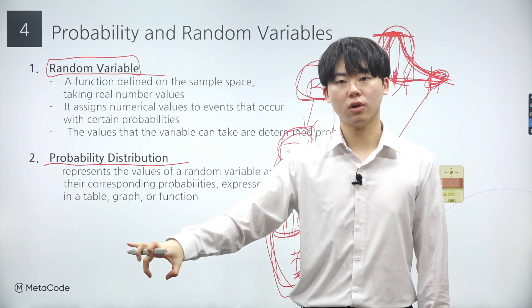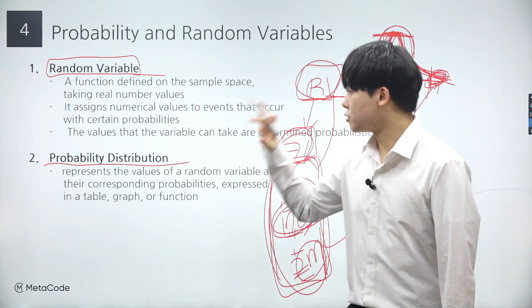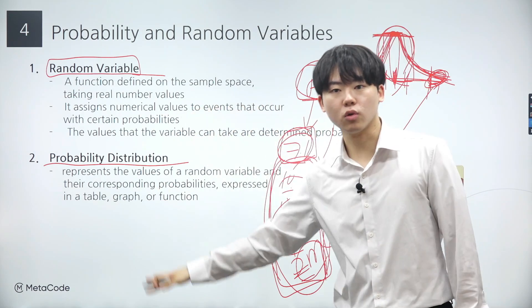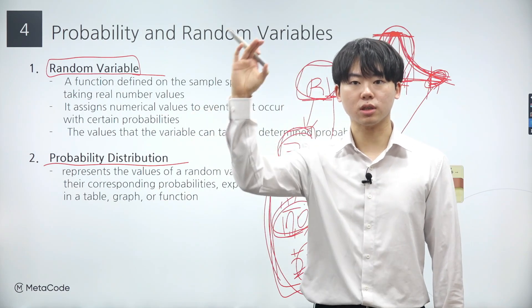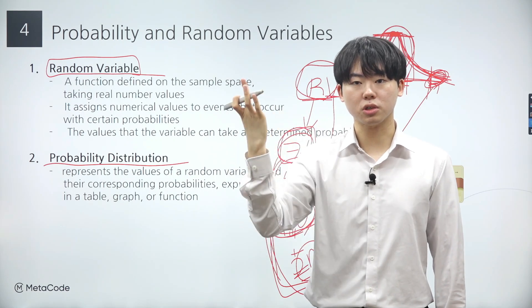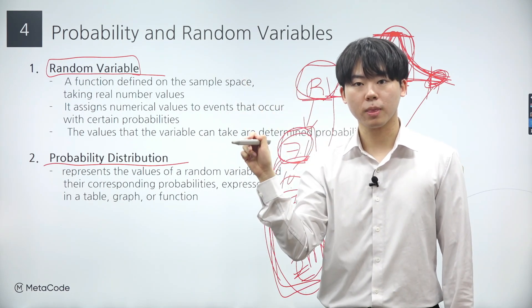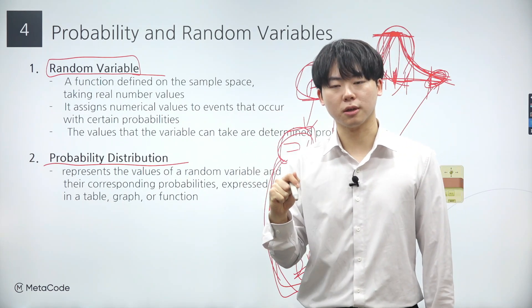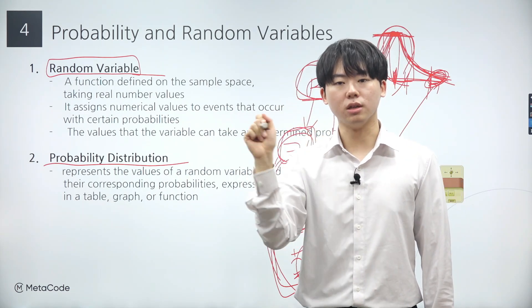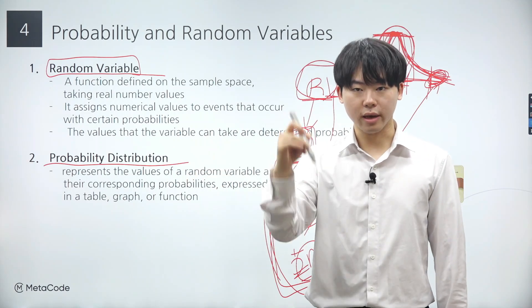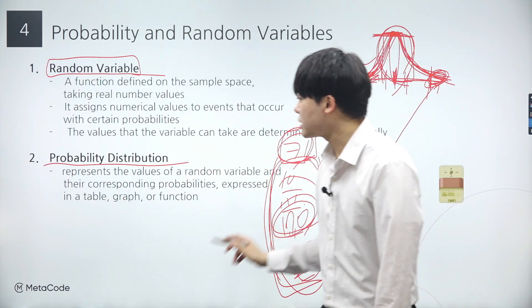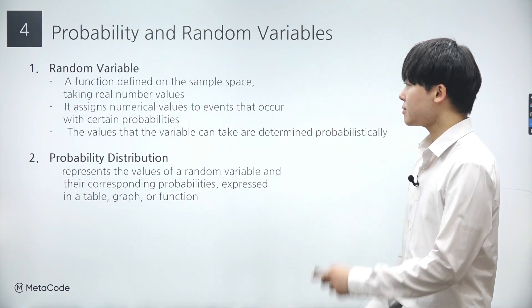Once again, please remember that the random variable is a crucial concept in statistics, and the probability distribution is a function that takes an event as input and returns a real value as output. Additionally, each event is associated with a certain probability. Do you remember the table we created earlier? In that table, each event was mapped to specific values like 0, 1, and 2, and the values were also linked with probabilities.